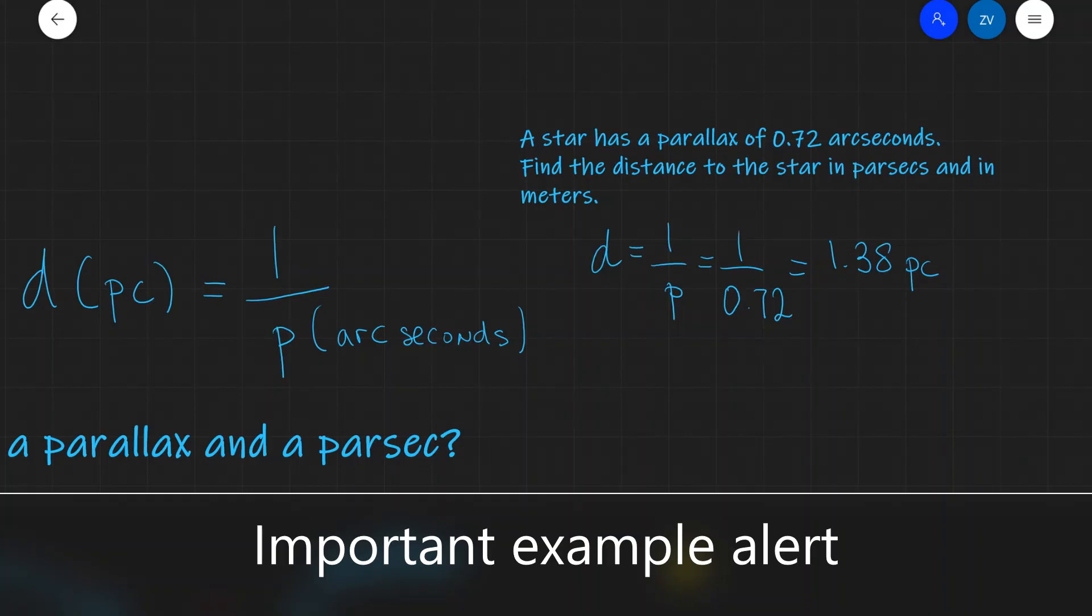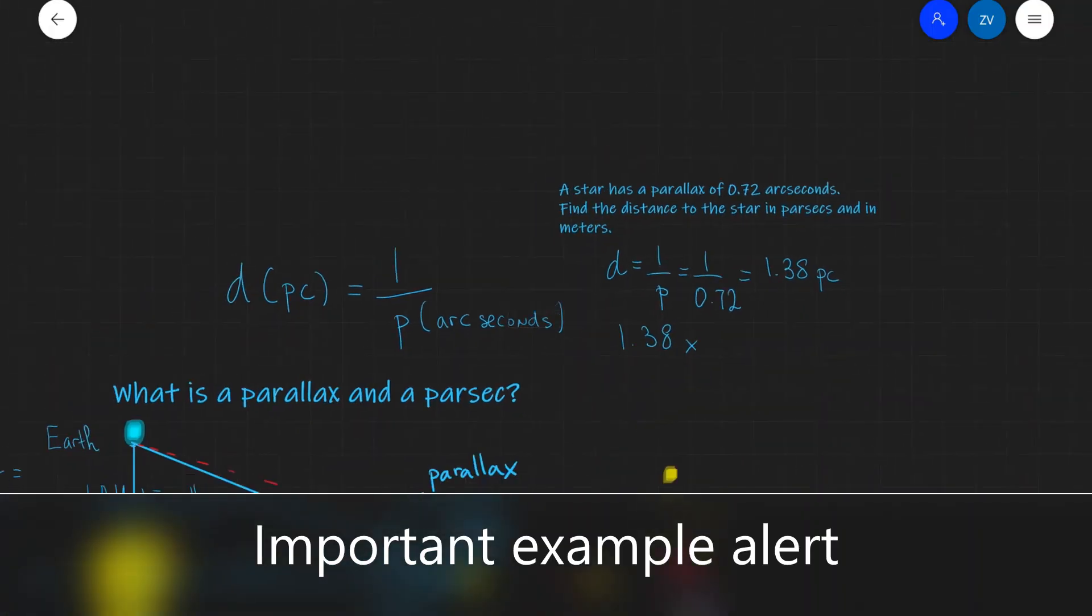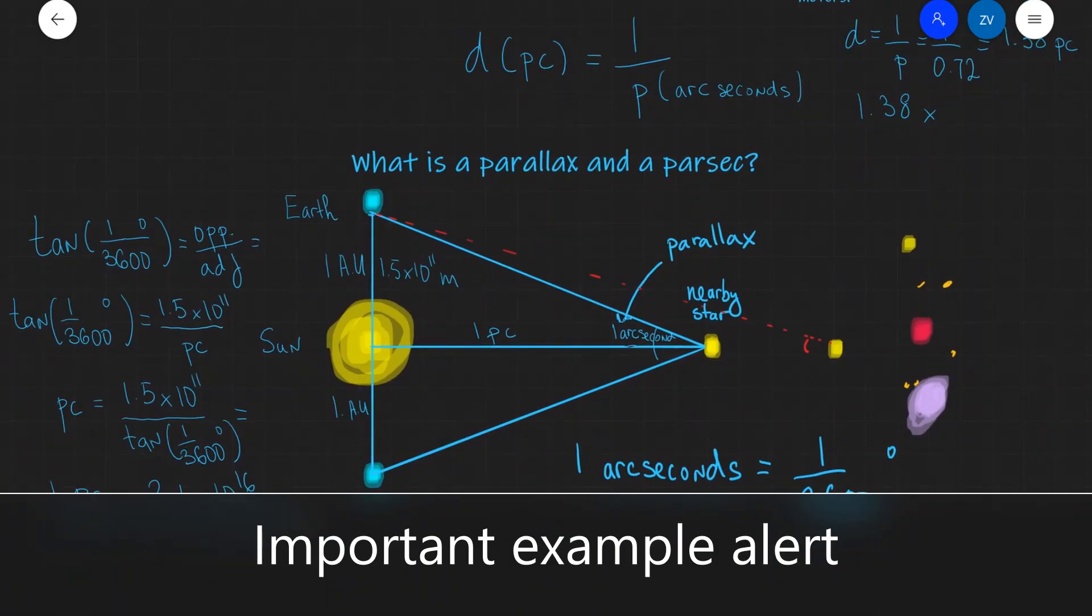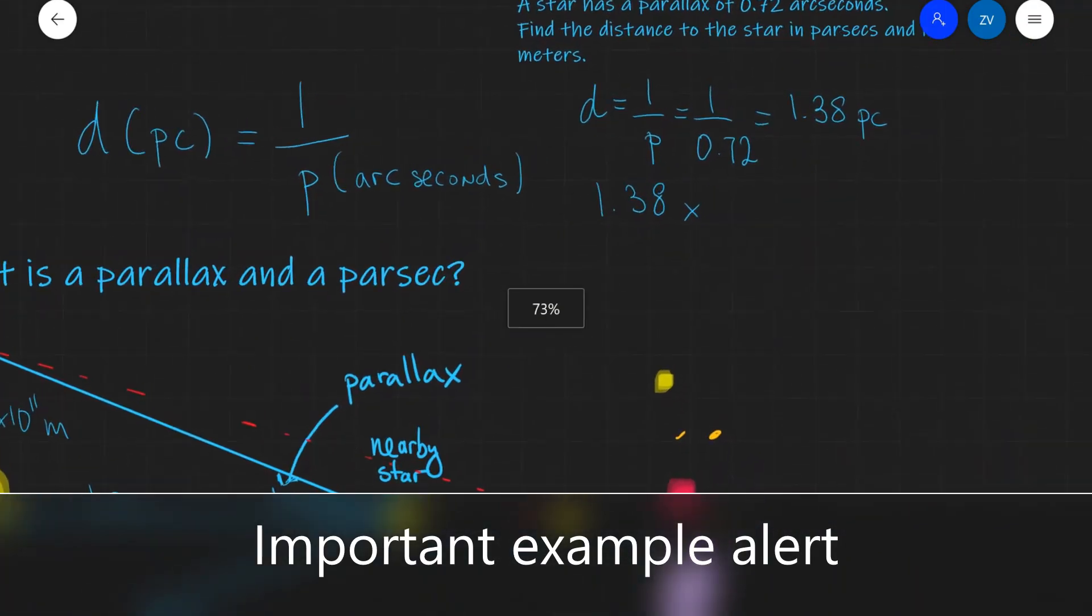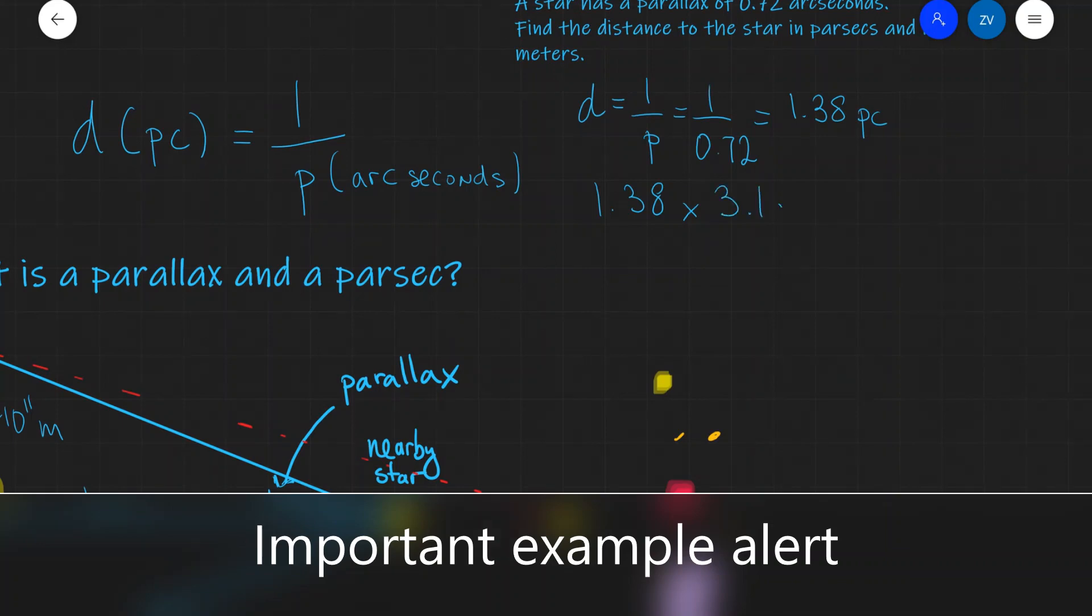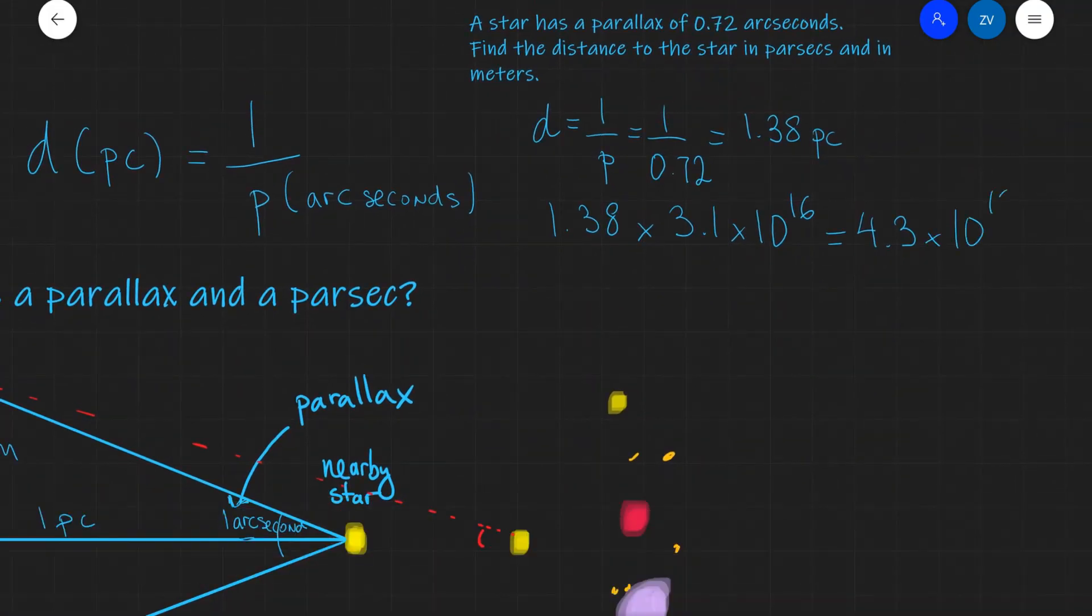Now, in order to convert from parsecs to meters, we need to multiply by the conversion factor. So, 1.38 times, if you remember, we derived the conversion factor. 1 parsec is 3.1 times 10 to the power of 16. So, we can multiply this. 1.38 times 3.1 times 10 to the power of 16. And let's put that into a scientific calculator. And we are going to get about 4.3 times 10 to the power of 16 meters.